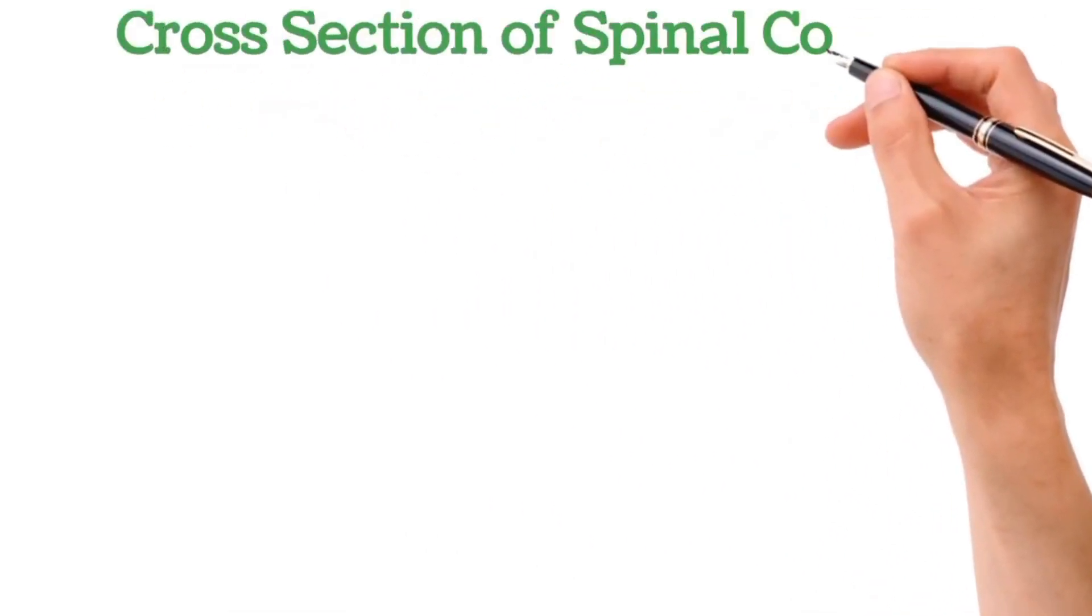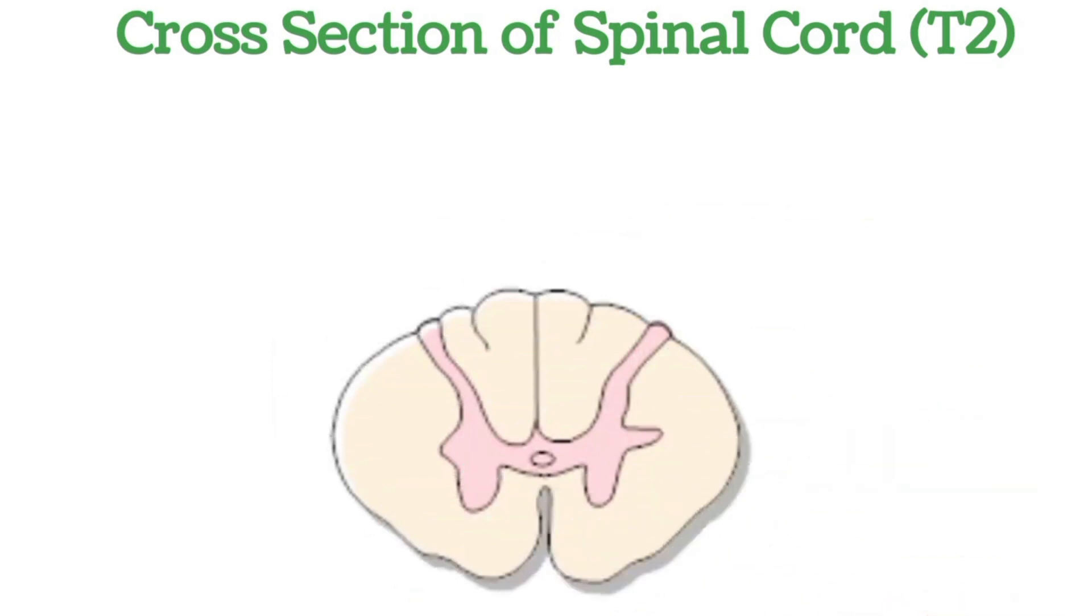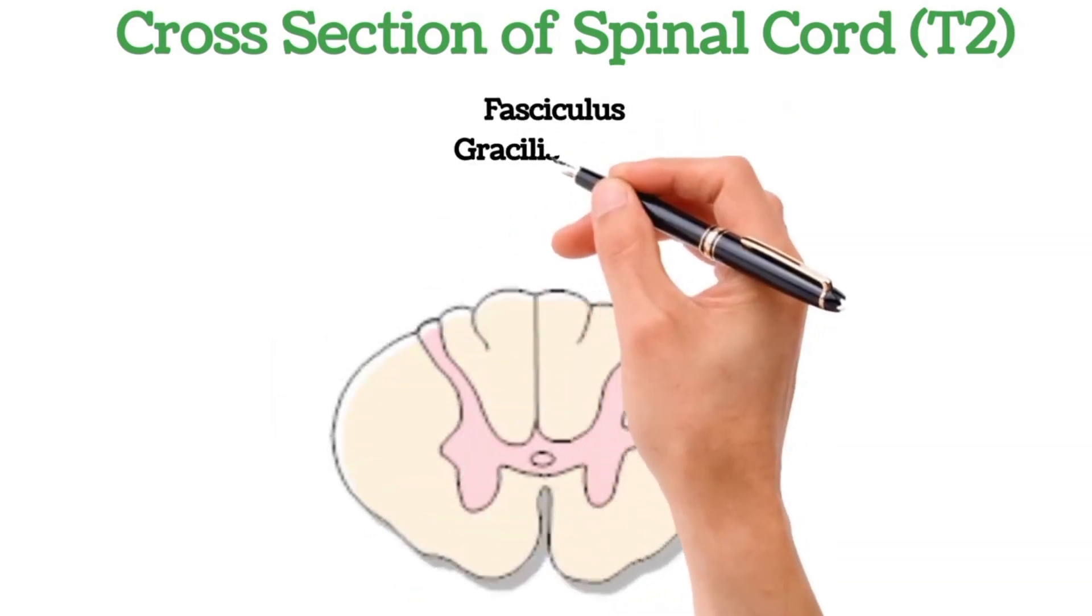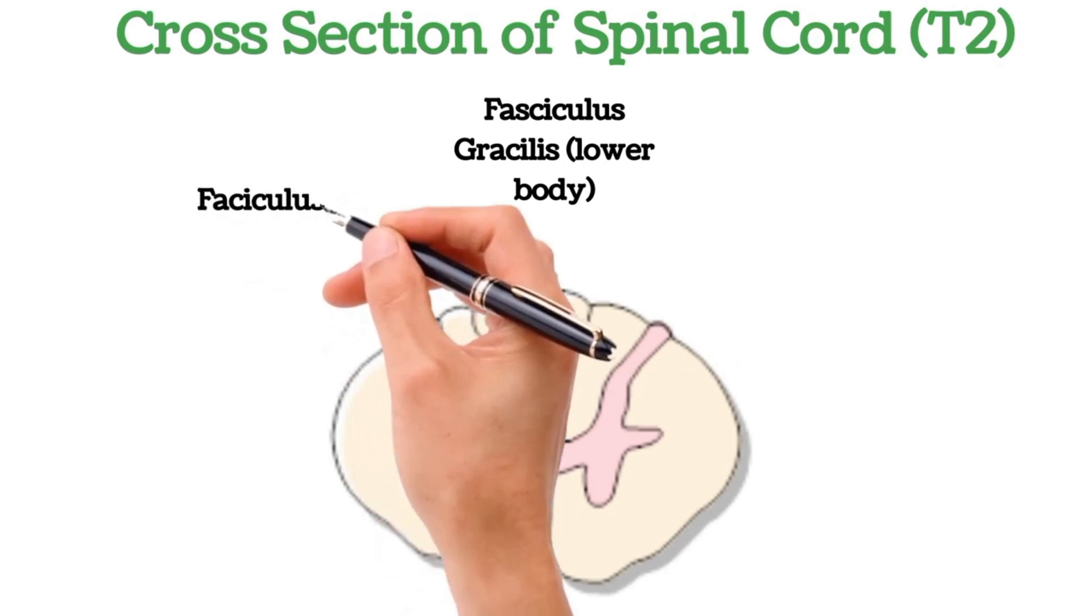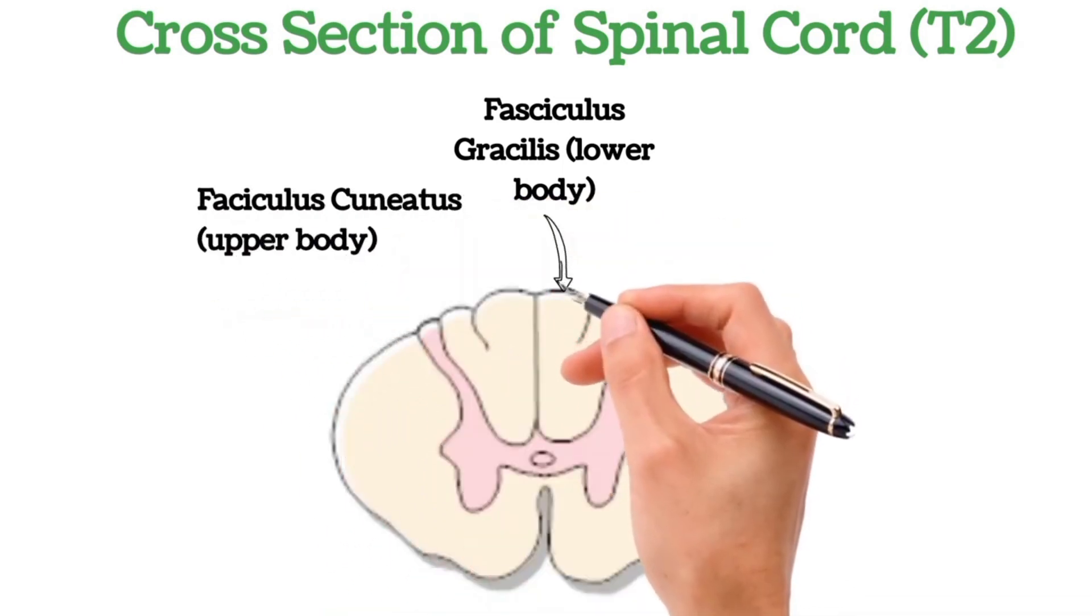This is the cross section of spinal cord at the level of T2. The dorsal column medial lemniscus system comprises of fasciculus gracilis which carries sensations from lower part of body and fasciculus cuneatus which carries sensations from upper part of body.